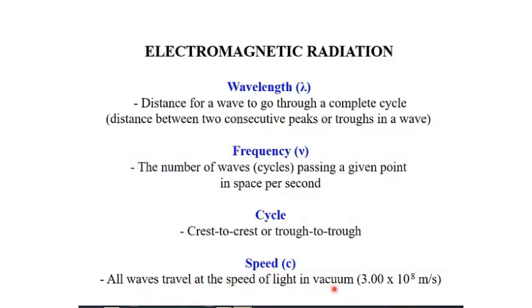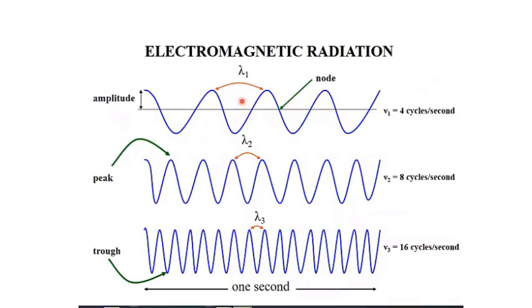In the diagram, λ1, λ2, and λ3 each represent a wavelength. For frequency, you fix a point and count how many waves pass through it. In the first wave, four cycles pass per second; in the second, eight cycles per second; and in the third, sixteen cycles per second — shown across a one-second timeline.